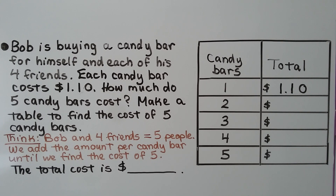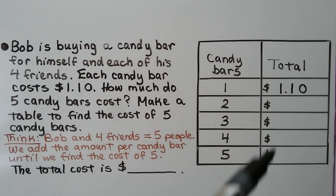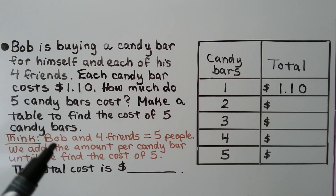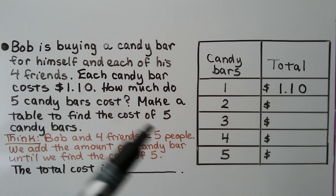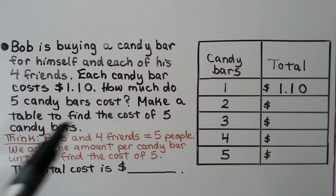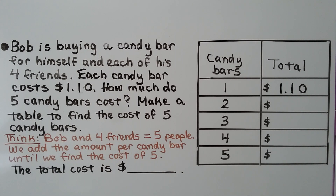Bob is buying a candy bar for himself and each of his four friends. Each candy bar costs $1.10. How much do five candy bars cost? We make a table to find the cost of five candy bars. Bob and four friends equals five people — that's why it's asking for five candy bars. We add the amount per candy bar until we find the cost of five candy bars.